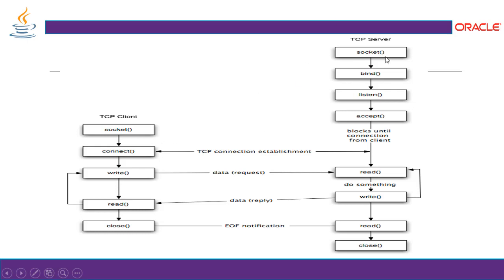We have a TCP client and TCP server, and these are the steps and methods we invoke in the application. Create a socket, create a bind by sharing the IP address and port, then listen to the port and accept. Once the server is running, the client tries to reach the connection and requests it. On the client side, it creates a socket and invokes the connect method, which goes to the server and initiates it once the request is confirmed.